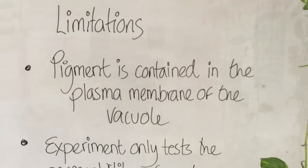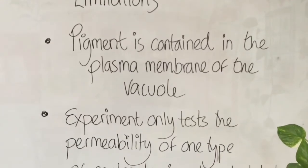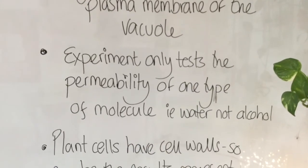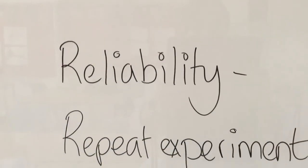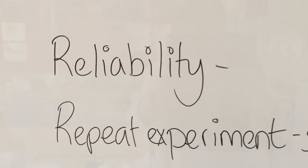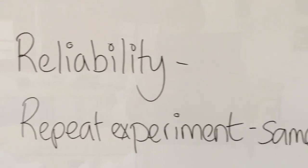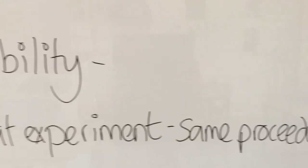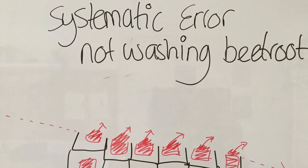Now this experiment clearly has its limitations. For instance the pigment is actually contained in the plasma membrane of the vacuole. What we're probably testing is the permeability of the cell membrane. Also the experiment only tests the permeability of one type of molecule, i.e. water, it's not tested alcohol or any other molecules. Also plants have cell walls so maybe the results represent the leakage through the cell wall. Perhaps the pigment had leaked out of the vacuole out of the membrane but it was actually being contained by the cell wall. So there are plenty of limitations within this experiment.